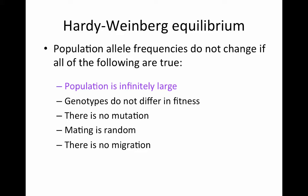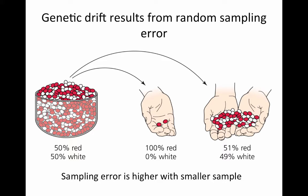Genetic drift is the effect of anything that happens just completely at random to change allele frequencies. This can cover any kind of accidental random removal of individuals from the population, random deaths that have nothing to do with the fitness of their genes to survive in that environment. The way we most commonly think about the effects of genetic drift is in terms of random sampling error that occurs when alleles combine together in the gene pool to form genotypes.